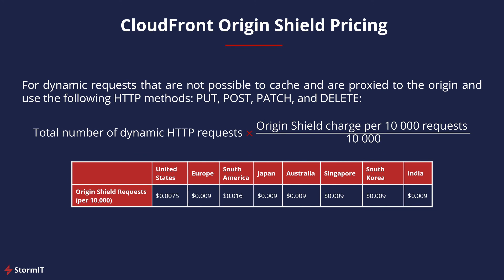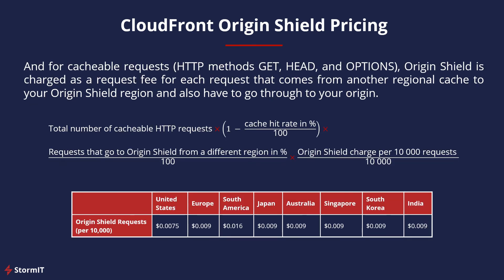For CloudFront Origin Shield pricing: for dynamic requests that are not possible to cache and are proxied to the origin — such as HTTP methods PUT, POST, PATCH, and DELETE — you are paying for every request that goes through the chosen regional edge cache. This table represents the price based on the chosen region for your Origin Shield. For example, if you choose the Frankfurt regional edge cache as your Origin Shield, you would pay a set rate per 10,000 requests. For cacheable requests like GET, HEAD, and OPTIONS HTTP methods, Origin Shield is charged per request for each request that comes from another regional cache to your Origin Shield region and also has to go through to your origin — essentially, on a cache miss.